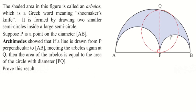The shaded area in this figure is called an arbelos, which is a Greek word meaning shoemaker's knife. It is formed by drawing two smaller semicircles inside a large semicircle.